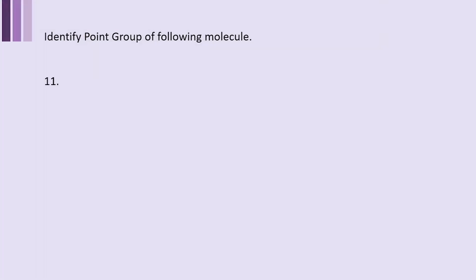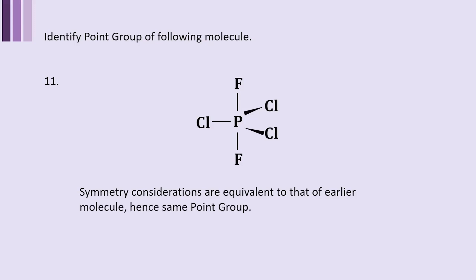Further going for some variations, you will find this molecule where there are two fluorine atoms and three chlorine atoms in the plane and the axial bonds are containing Phosphorus chlorine bonds. If we look from symmetry considerations it is same as we have discussed earlier. Symmetry is not changed even though you have replaced Fluorine with chlorine atoms. So from symmetry considerations this point group should also be D3H symmetry.